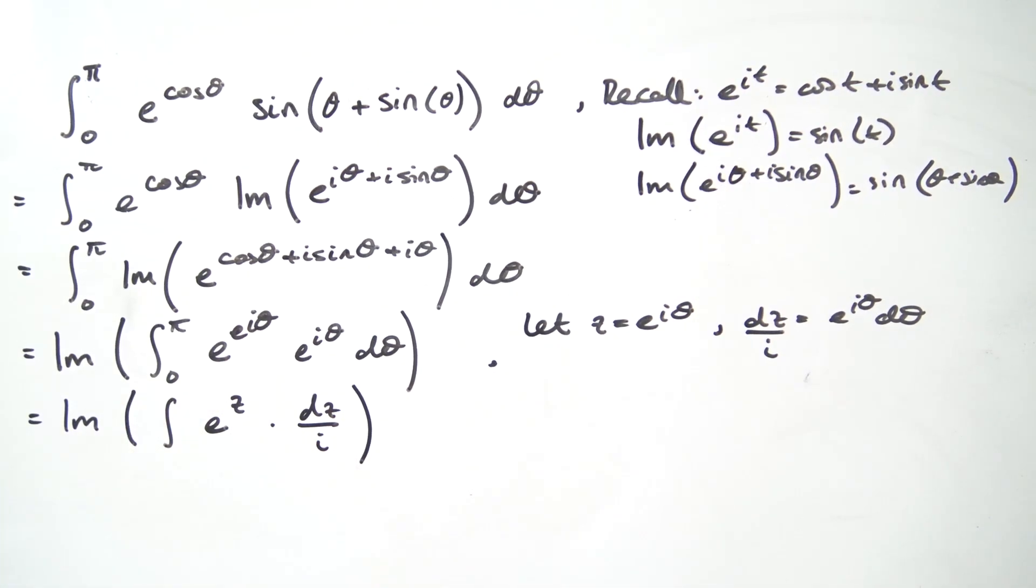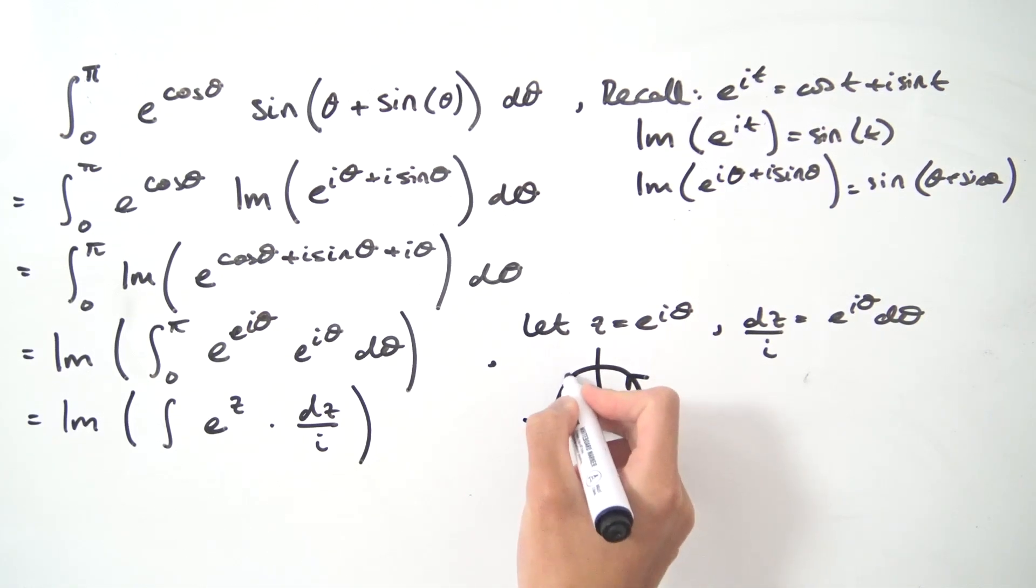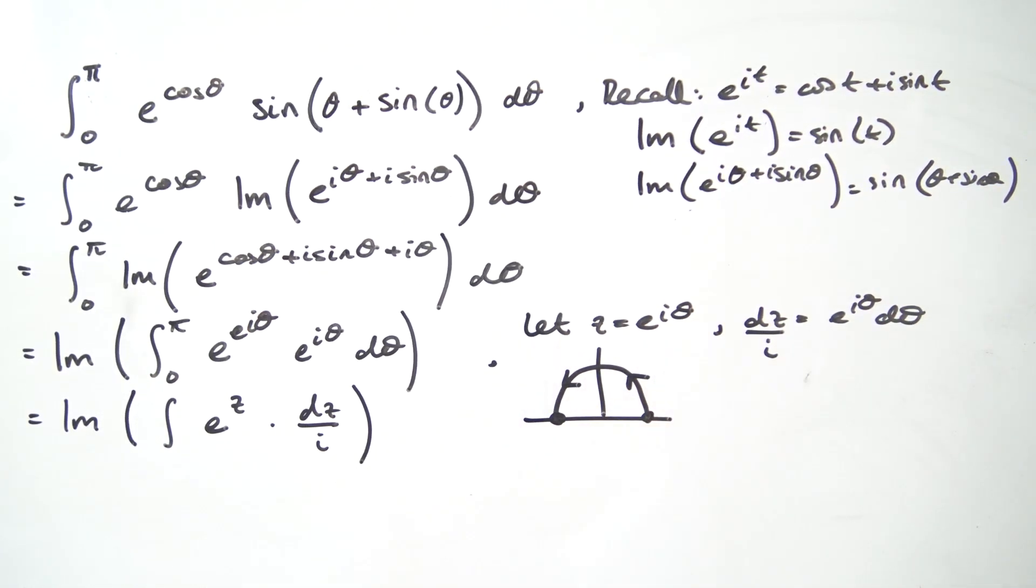And how about the bounds over here? Well notice what is the map? It's a complex exponential map, which means if we're on the interval from 0 to pi, we're just going to map to a semicircle of radius 1. If I draw a little picture here, we map to this semicircle with a radius of exactly 1, traversed in the anti-clockwise direction.